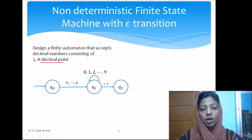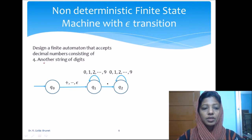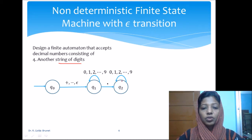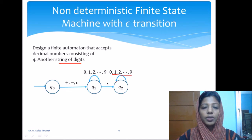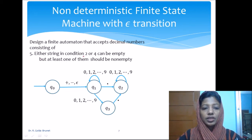The third step is to accept a mandatory decimal point, so we transition from q1 to q2 on a decimal point input. The fourth step is to accept another string of digits: from q2, we accept digits 0–9 with a self-loop, allowing more than one digit after the decimal point.